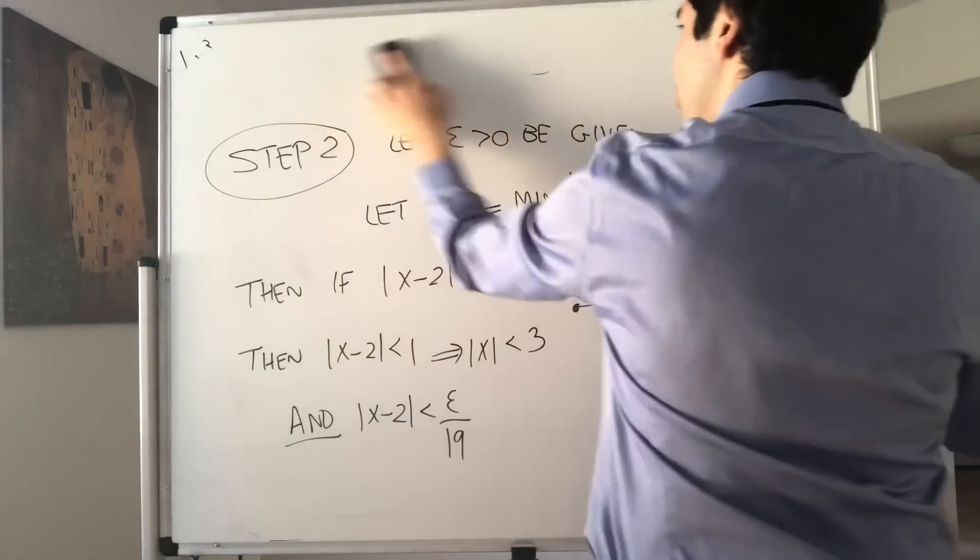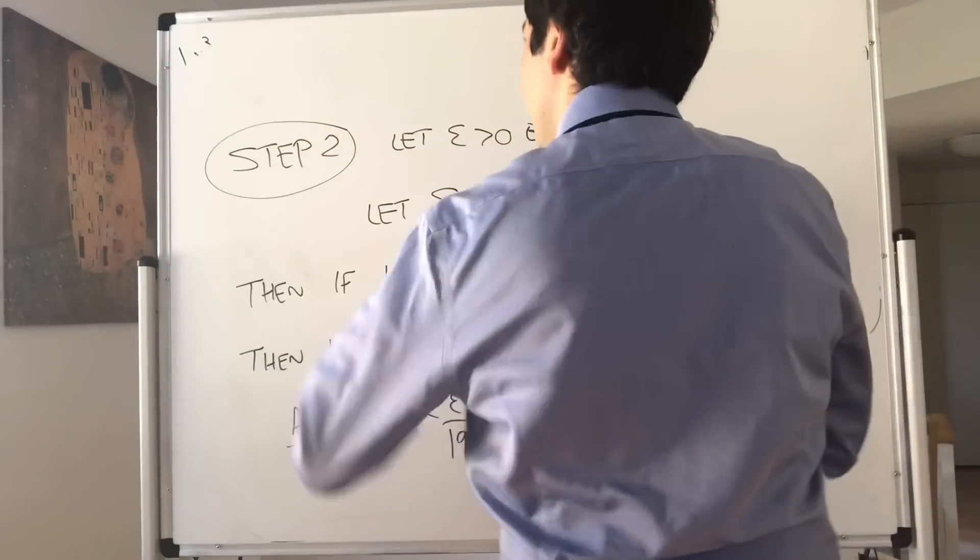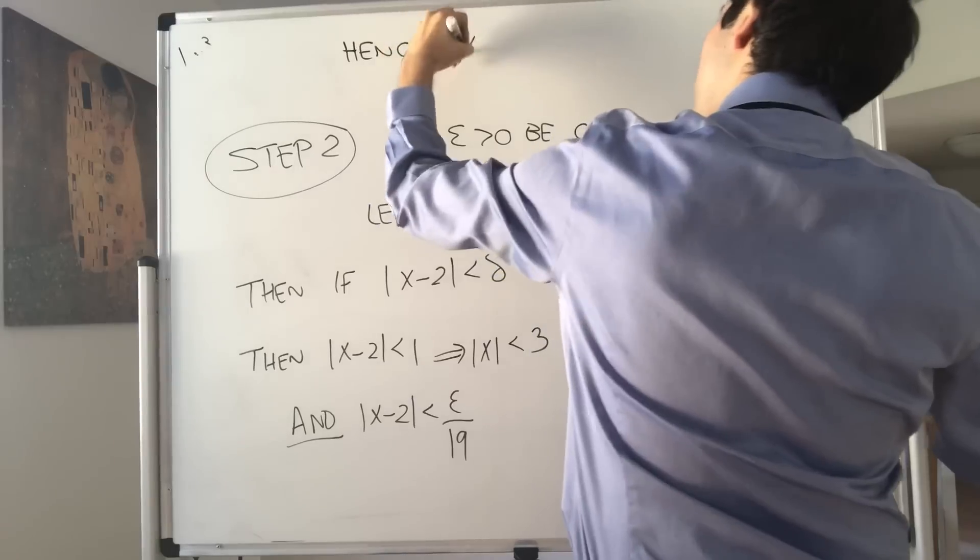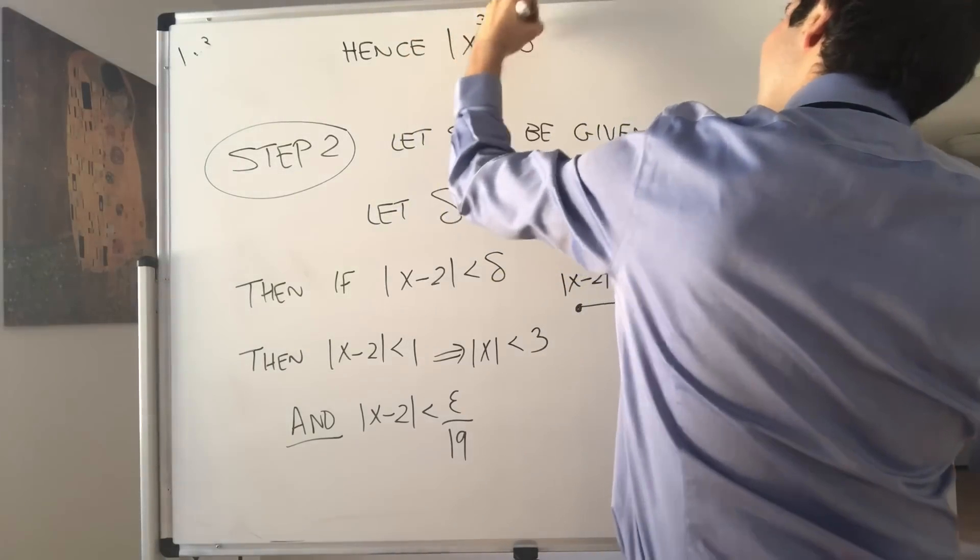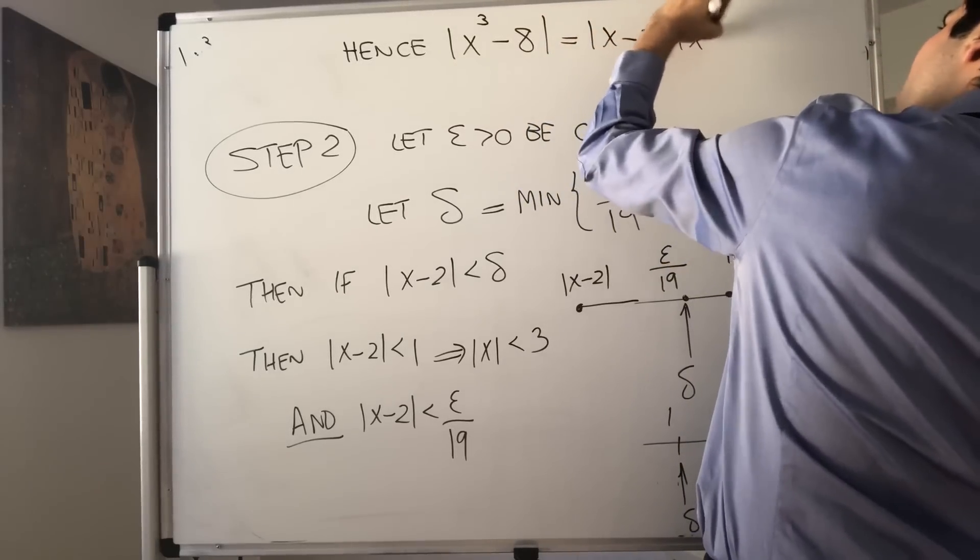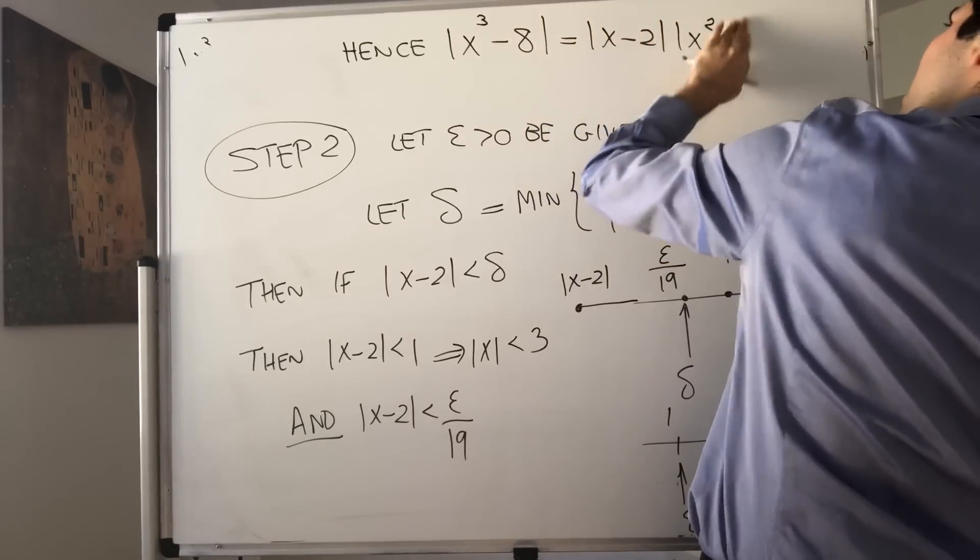Therefore, going back to our proof, hence x cubed minus 8 becomes x minus 2 times x squared plus 2x plus 4.